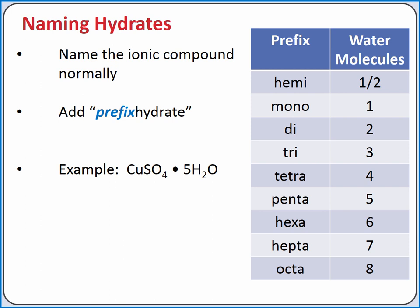If we name CuSO₄·5H₂O, our ionic compound is copper(II) sulfate. Since there are 5 water molecules associated with each formula unit, we add pentahydrate. So our hydrate is called copper(II) sulfate pentahydrate.